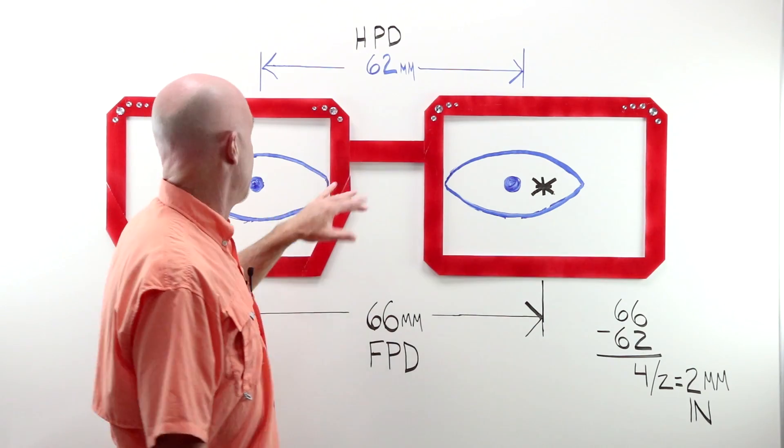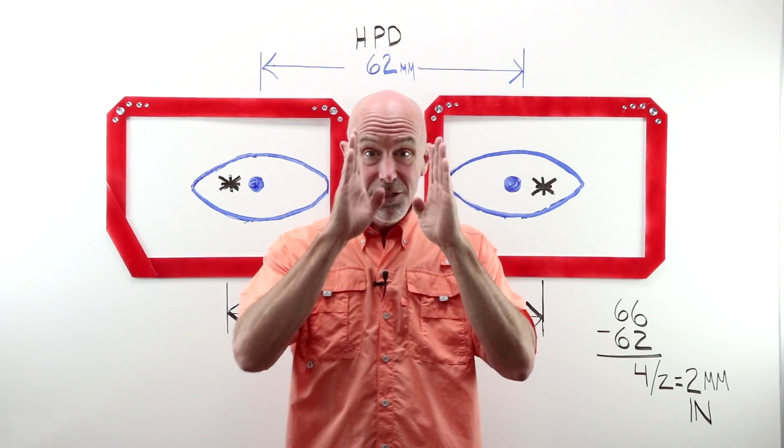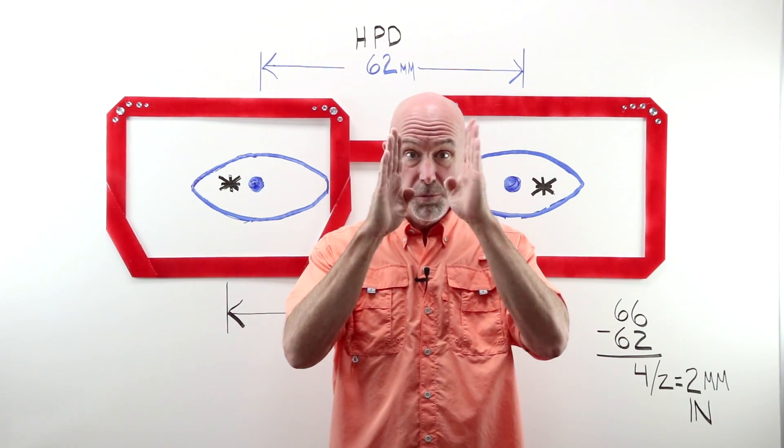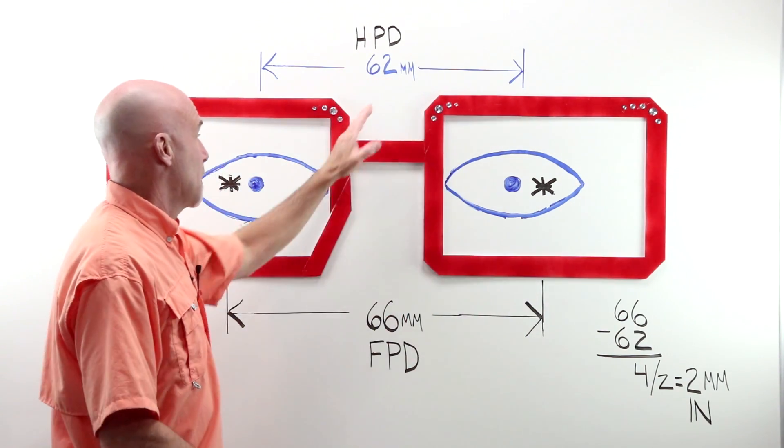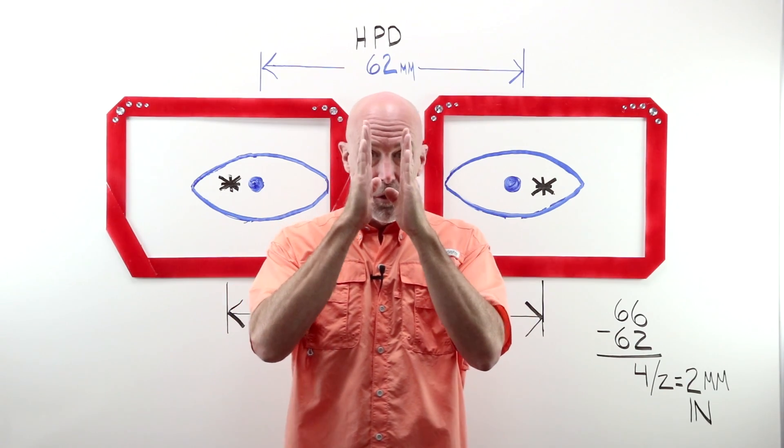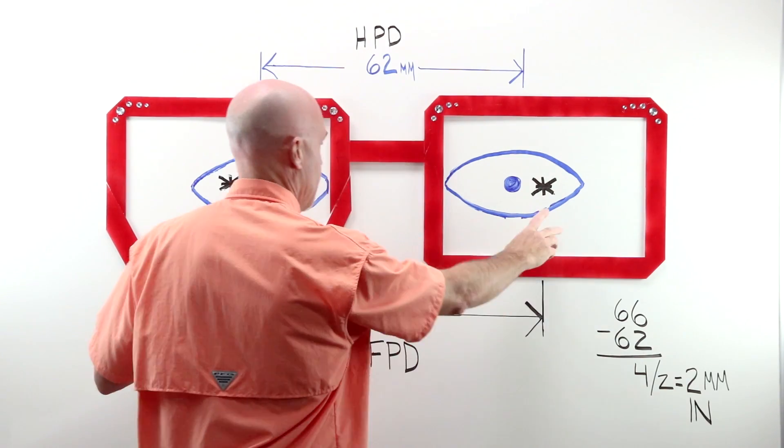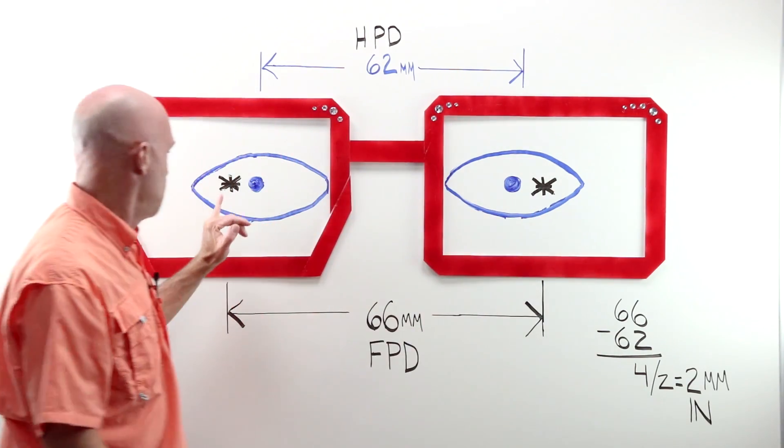My human PD, me, 62, from center of my pupil to the center of my pupil, 62 millimeters. My eyes are closer together than the center of the eye wire openings.